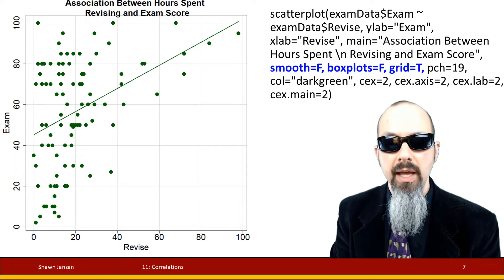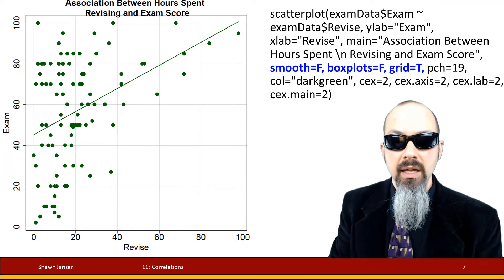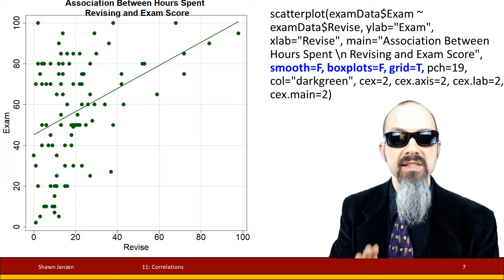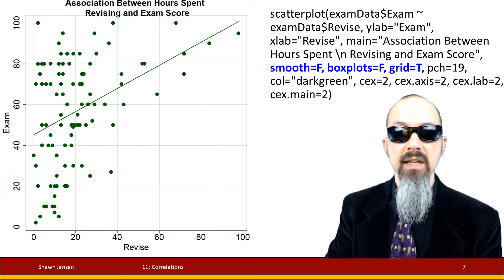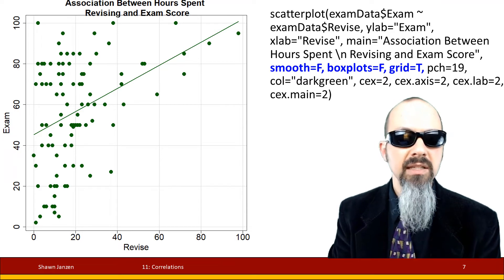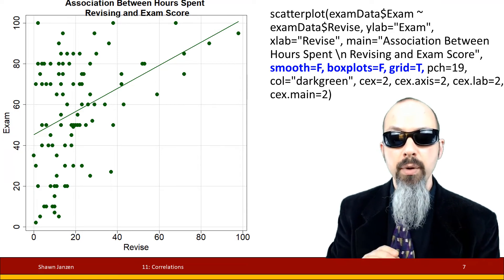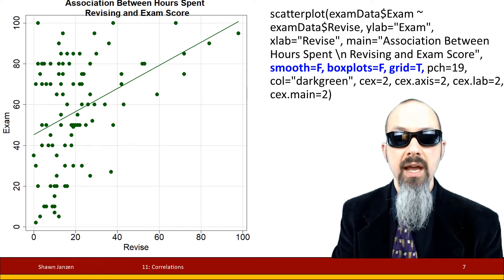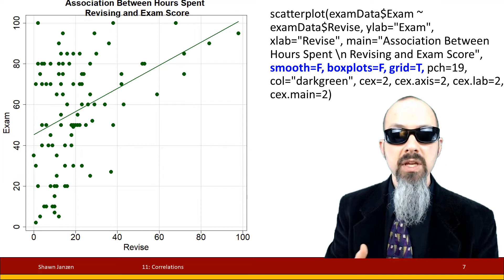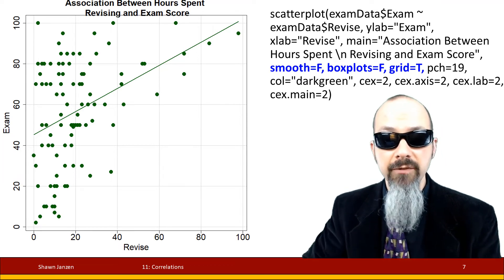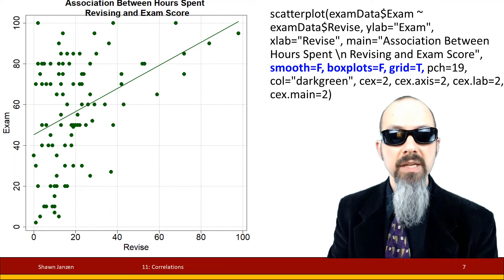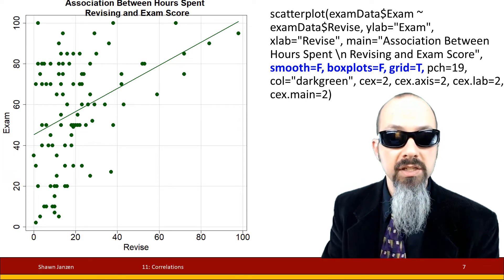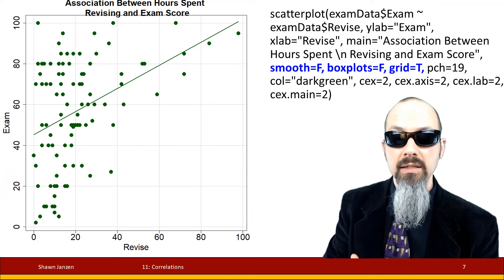I'm going to tweak these options a bit to make it look more like what we had before. The code chunk up at the top — most of it you've seen before — it's using the scatterplot function, changing the x-label, giving it a title, changing the size and color. But I put into blue the new features specific to scatterplot that could be useful. `smoothing = FALSE` turns off the smoothing lines. `boxplots = FALSE` gets rid of the box plots on x and y — you could also keep one and remove the other.